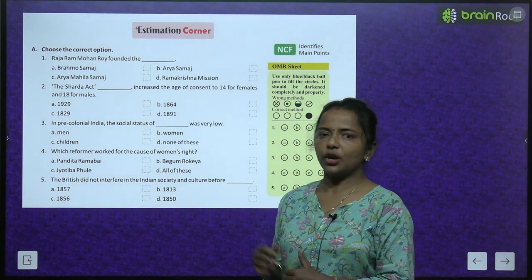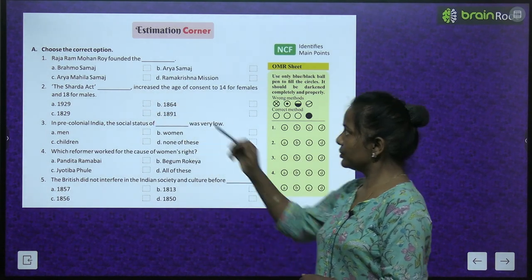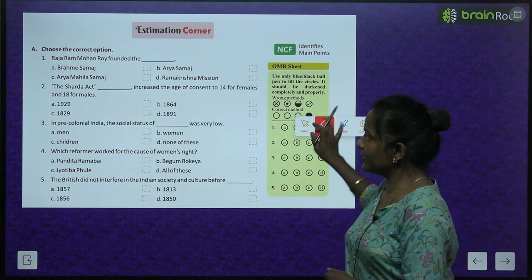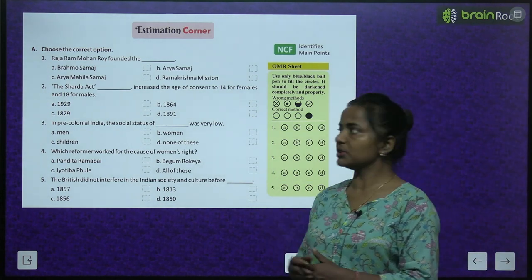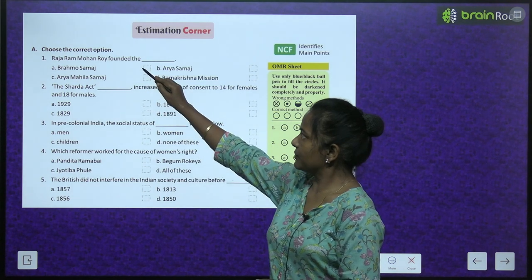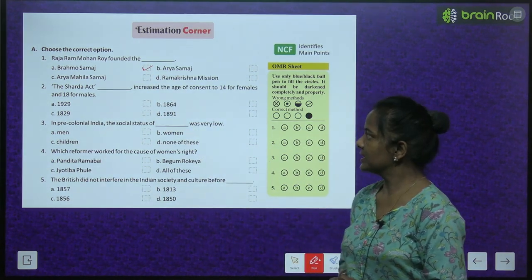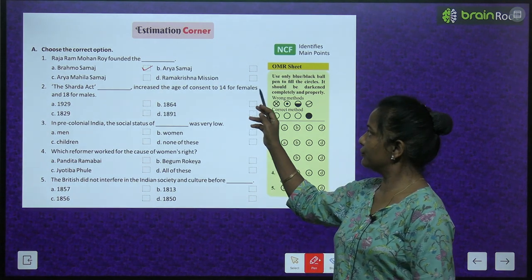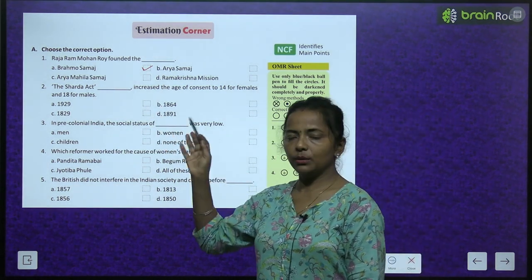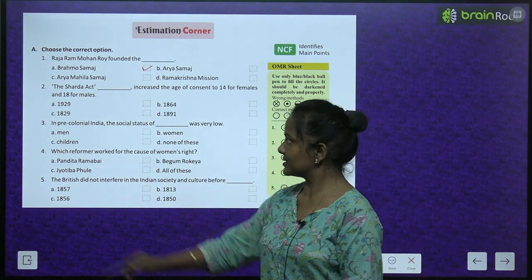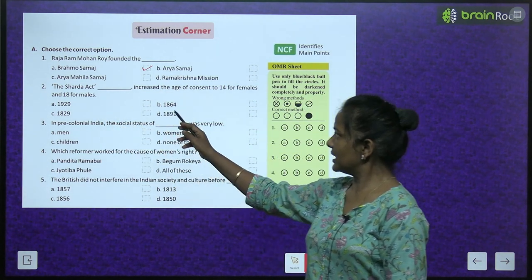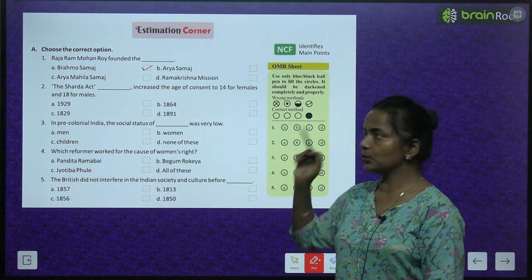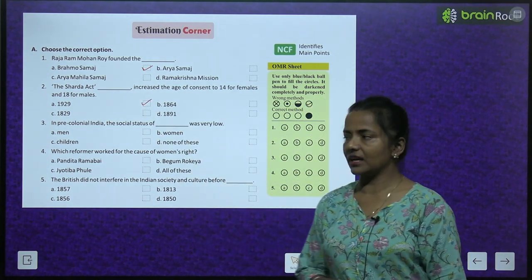Exercise — choose the correct option. Raja Ram Mohan Roy founded the: Brahmo Samaj, Arya Samaj, Arya Mahila Samaj, or Ramakrishna Mission? Answer: Raja Ram Mohan Roy founded the Brahmo Samaj. The Sharda Act increased the age of consent to 14 for females and 18 for males — in which year was it passed? 1929, 1864, 1829, or 1891? Answer: It was passed in 1929.